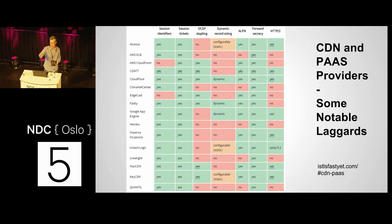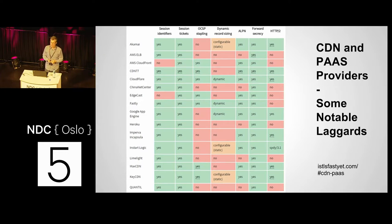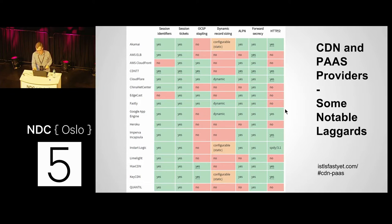Looking just at H2, the main impediment I see to people switching is Amazon Web Services — they just haven't finished their support of H2. Almost everybody else except China Net Center doesn't support it, and Edgecast, which is a pretty important player, is also slow on quite a few of the important security issues.